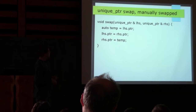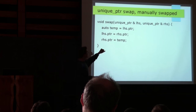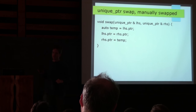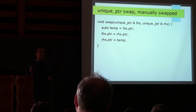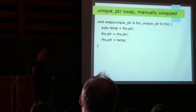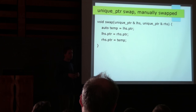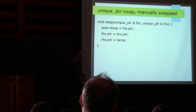The manually written specialized swap looks much simpler: we just have a regular pointer variable as a local variable, store your pointer, and do a couple of pointer assignments — no need for delete, no need for the null-setting. A comment was raised that if you don't set temp to null, the destructor will do something awful. But in this case, temp is just a regular raw pointer, not a unique_ptr.